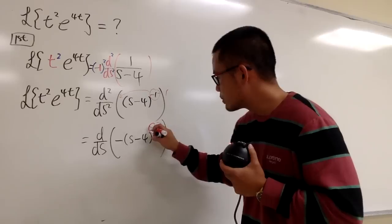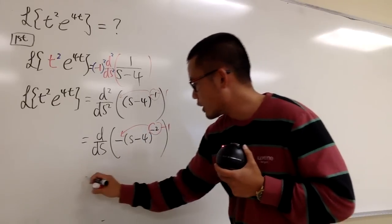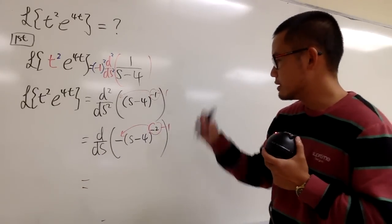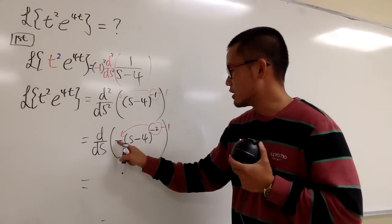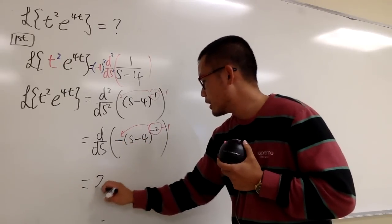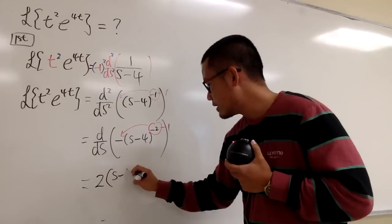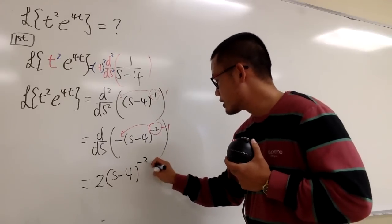Anyway, right here, do it again. So bring this to the front and then minus 1, so no more derivative because this will be the answer. 2 in the front. All together because negative, negative becomes positive 2. And then s minus 4 and then raised to the third power.